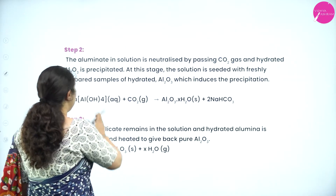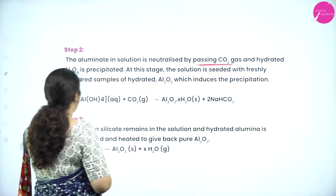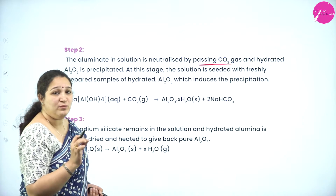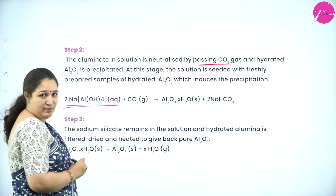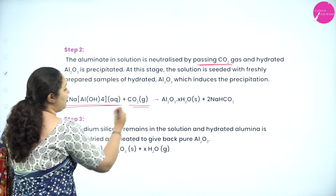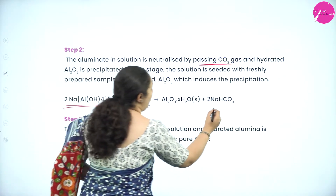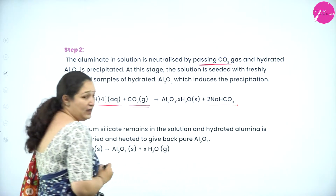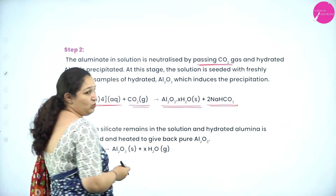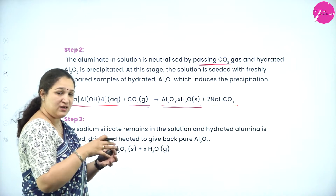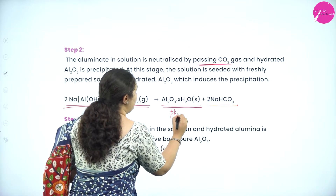Step 2 is neutralization of the aluminate solution by passing carbon dioxide gas, causing hydrated aluminium oxide to precipitate out. When CO₂ is passed, sodium reacts with carbon dioxide to form sodium bicarbonate in the solution, and aluminium oxide·xH₂O — that is, hydrated aluminium oxide — forms the precipitate.